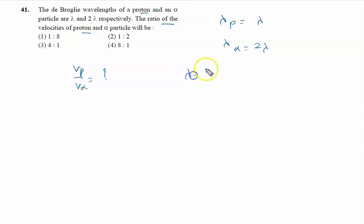We know that lambda is given by h upon p, or it is given by h upon mv.